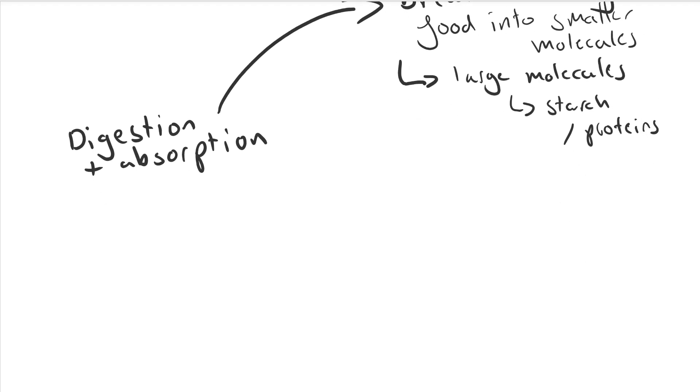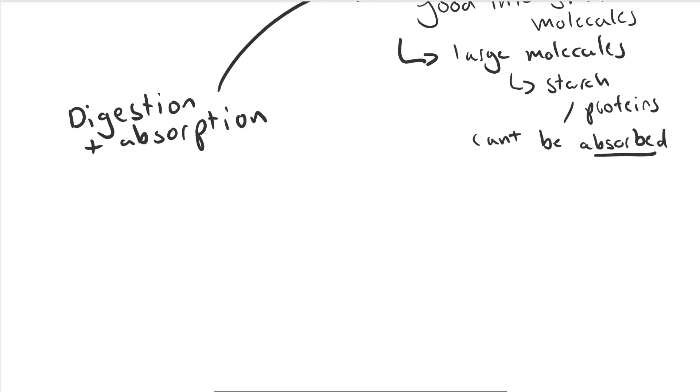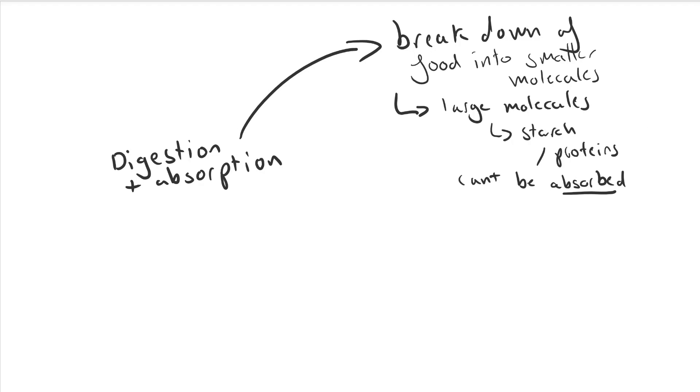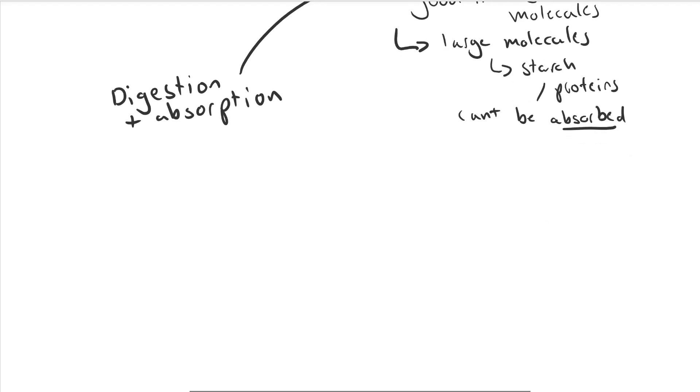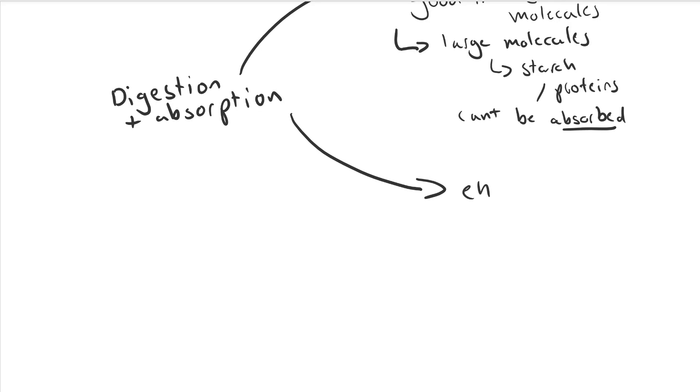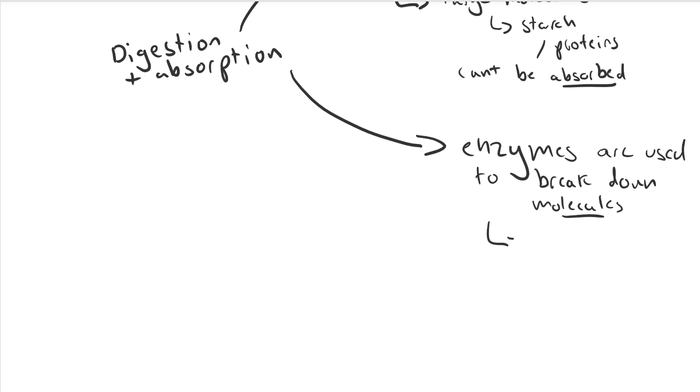What essentially happens during digestion and absorption is that enzymes hydrolyze the bonds between these large molecules, breaking them into smaller pieces. We're going to look at the three main types of large molecules that are broken down by the body for use elsewhere in cell production.